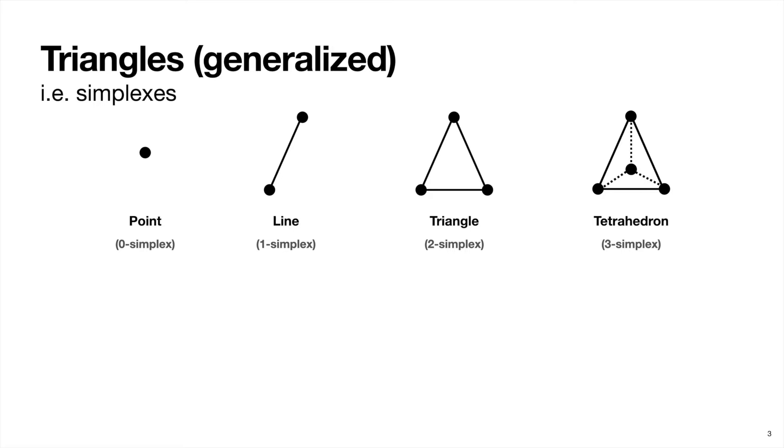So just like a collection of triangles can make any two-dimensional polygon, a collection of simplexes can approximate just about any complicated high-dimensional shape that may underlie our data. And so, since you'll probably see it elsewhere, the technical name for a collection of simplexes is called a simplicial complex. And this is a key concept in persistent homology.